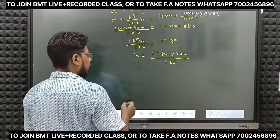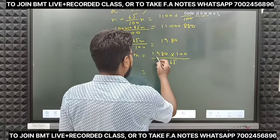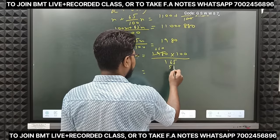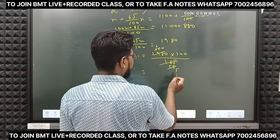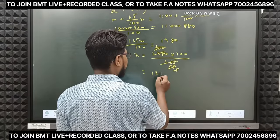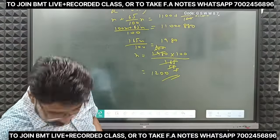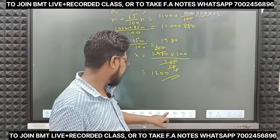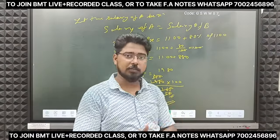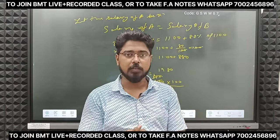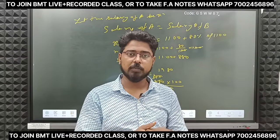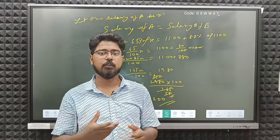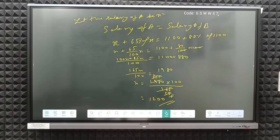So you can solve that yourself — the answer should be 1200. That's how we have done three questions today. For today, this is enough, because the class timing is up. Next class we will look at simultaneous equations. If you have any doubts, comment below. Thank you, best of luck, bye bye.